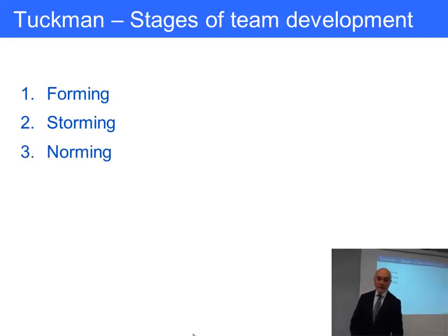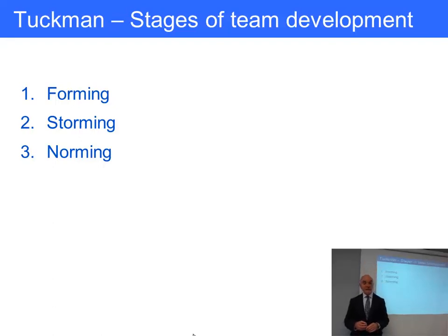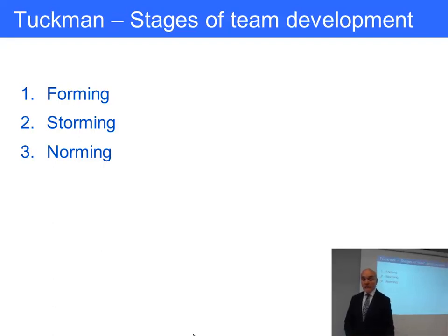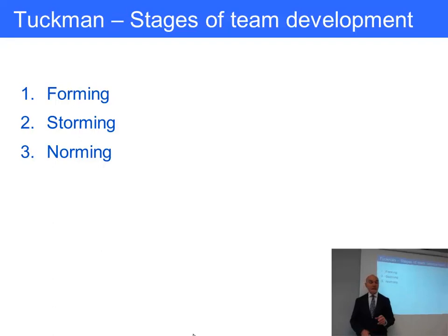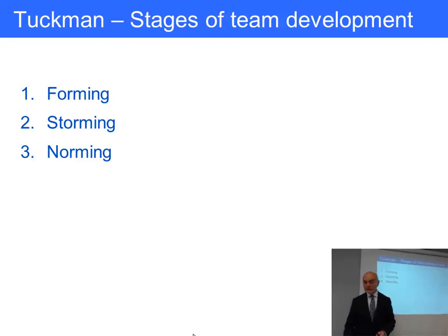Then there is norming, where group norms are evolved — standard or acceptable ways of the group behaving. Norming can take a little while to settle down: how often do we meet? How are meetings going to be conducted? How long do meetings need to be? Are minutes going to be circulated? What happens if somebody is absent? This is settling down to an acceptable method of operation.